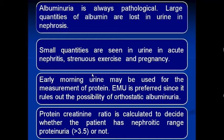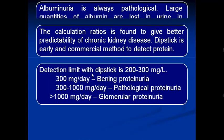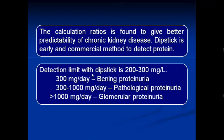The protein-creatinine ratio is calculated to decide whether the patient has nephrotic range proteinuria, which is more than 3.5 g/day. The dipstick is an early and commercial method to detect protein in urine, with detection limits of 200 to 300 mg per liter. A value of 300 mg per day is winning proteinuria; 300 to 1000 mg per day is pathological proteinuria; and more than 1000 mg per day is glomerular proteinuria.